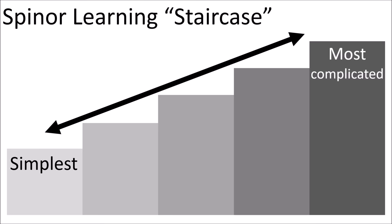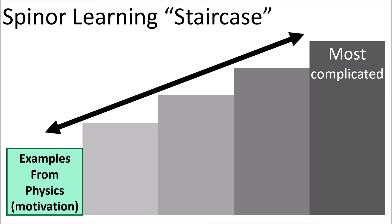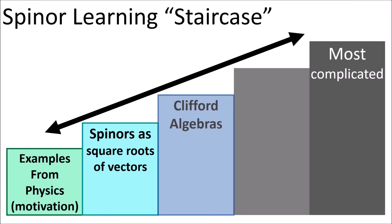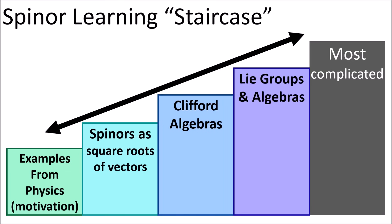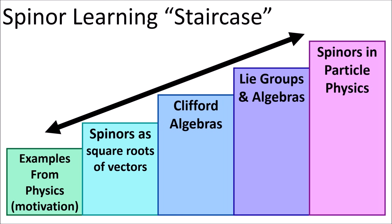My planned staircase has five steps: basic examples of spinors in physics, viewing spinors as the square roots of vectors, viewing spinors as members of Clifford algebras, viewing spinors in terms of Lie groups and Lie algebras, and finally talking about how spinors are used to describe all spin 1/2 particles in particle physics and quantum field theory.